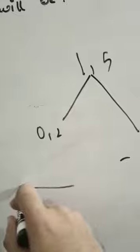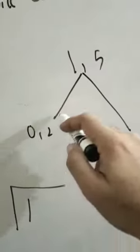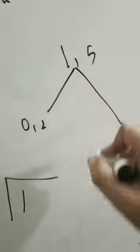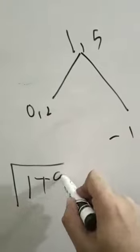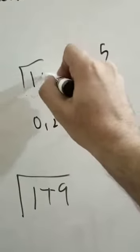The difference of 0 and 1 is 1. 1 squared is 1. 2 and 5 is 3. 3 squared is 9. This is root 10. This side is root 10.